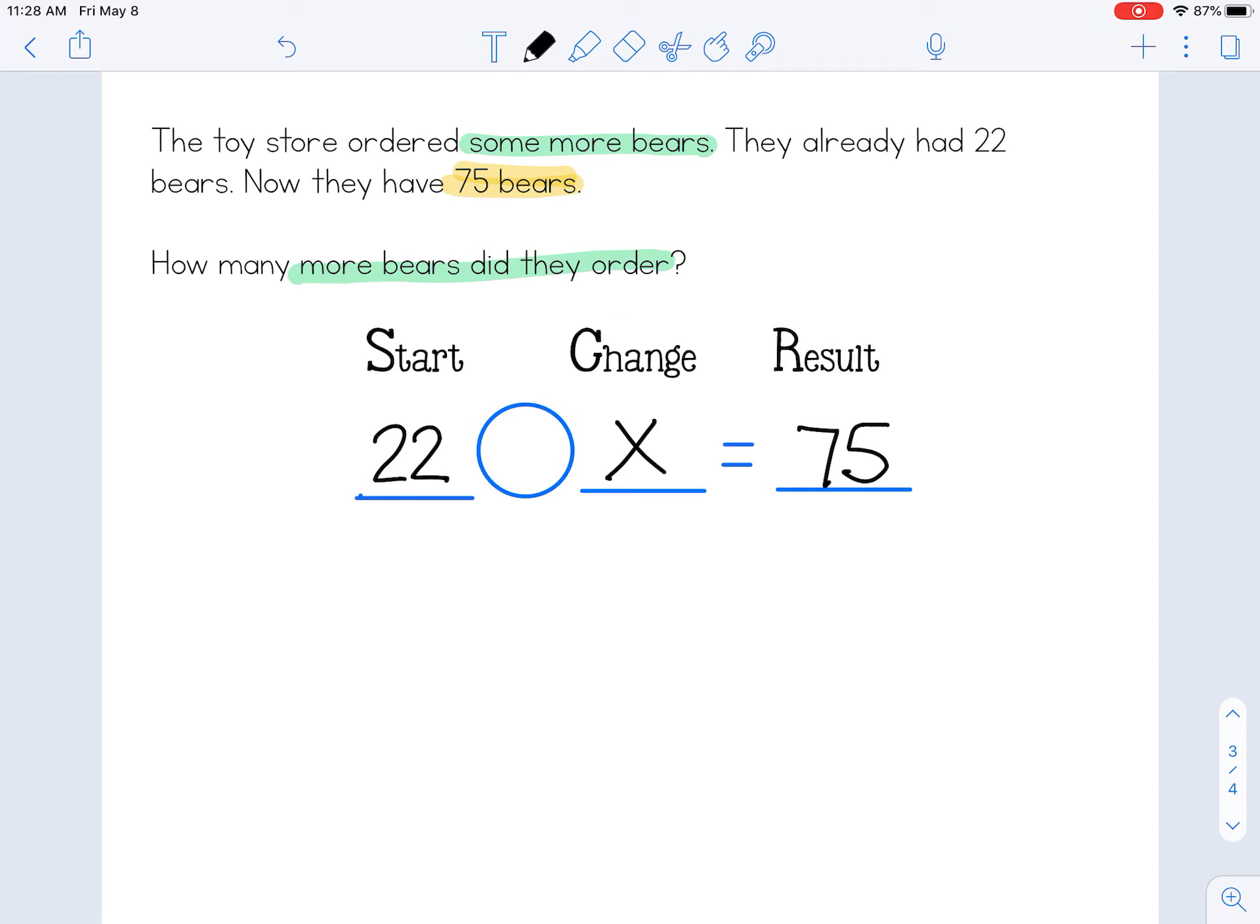So they started with 22 bears because they already had 22 bears. So that's what they started with. Then they ordered more.